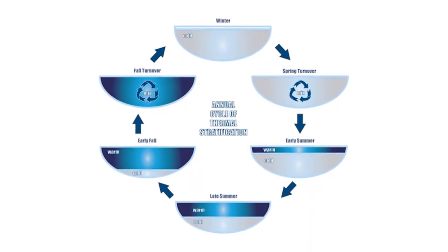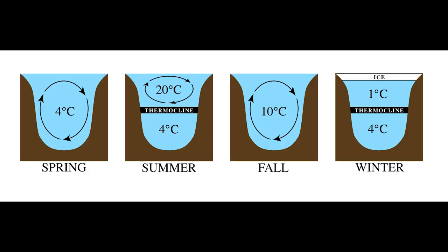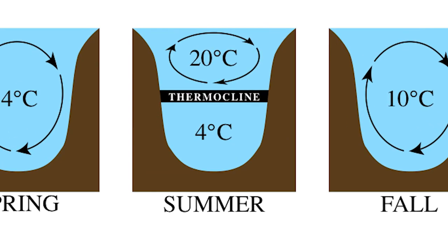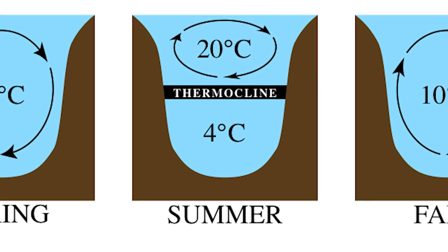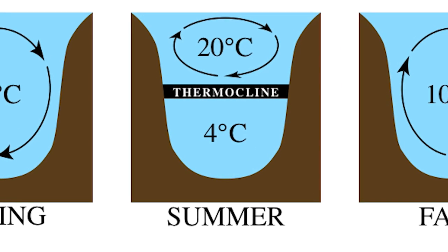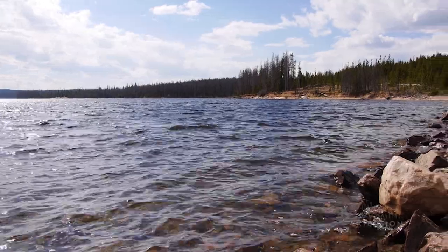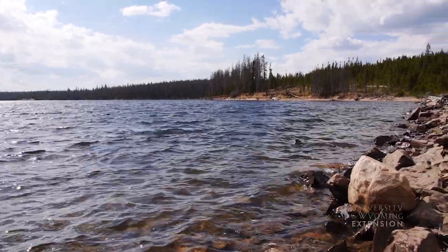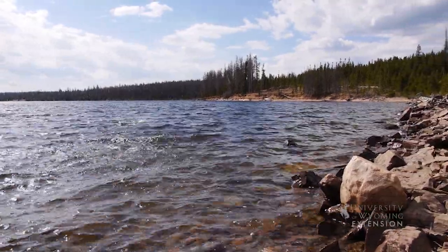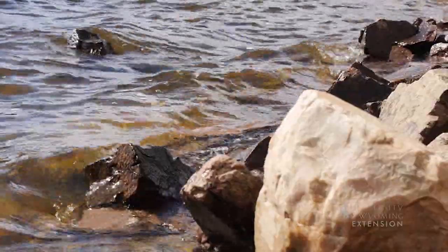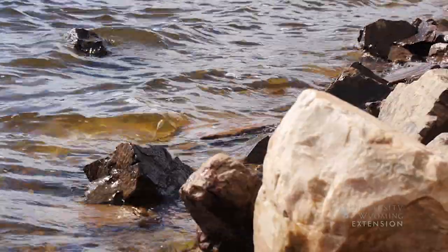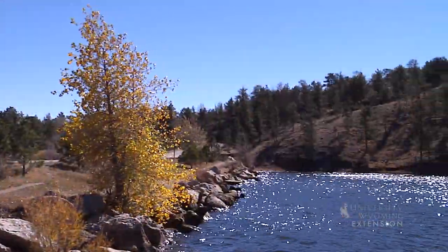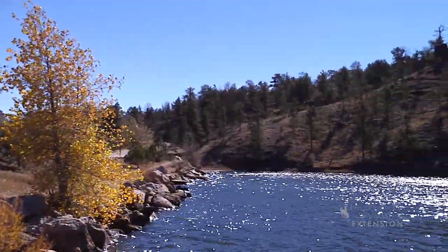Lakes become stratified during the summer and winter. During the summer, the top layer of lakes warms with the sun's heat. The lowest layer remains cold. In the middle is a layer of rapid temperature decline. Along with temperature, water density follows the same pattern, with lighter water on top and denser water on the lake floor.